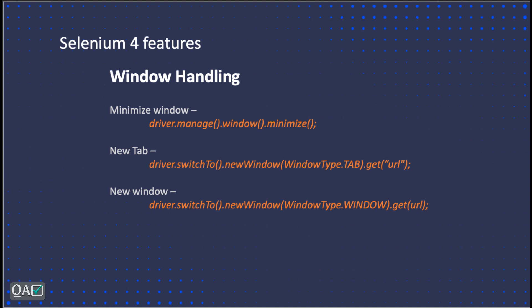We have categorized that into three different things. One is minimizing the window — you can even minimize the window. Before, we had keeping the browser window in full screen or maximizing. Full screen means it is completely occupying your monitor; maximizing covers all of your screen except the taskbar, or on Mac the Dock. Now they are giving another option where you can minimize and still perform your tests and actions.